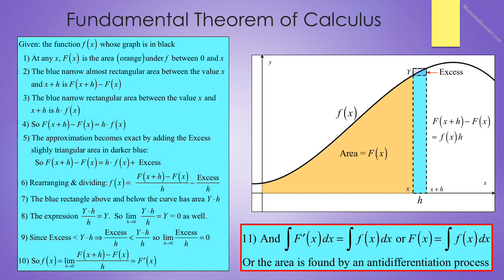So if we integrate both sides, we get the integral of capital F prime of x dx is equal to the integral of little f of x dx. So what we're saying is that the area is found by an anti-differentiation process. That is what the Fundamental Theorem of Calculus says.